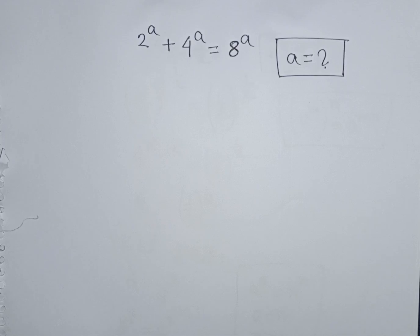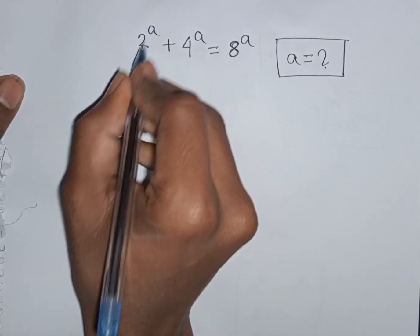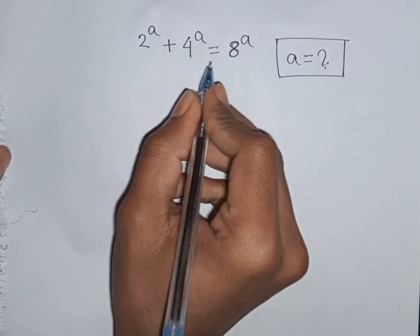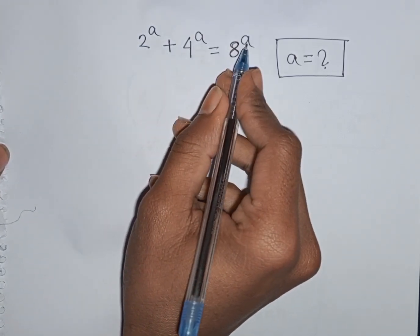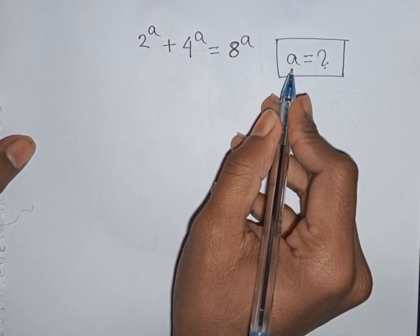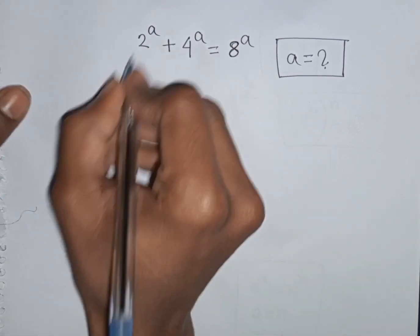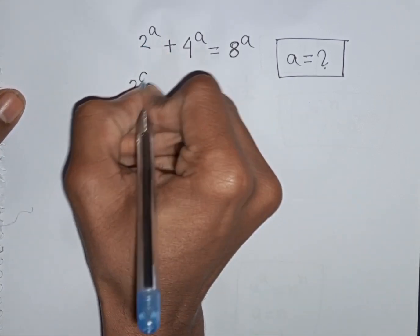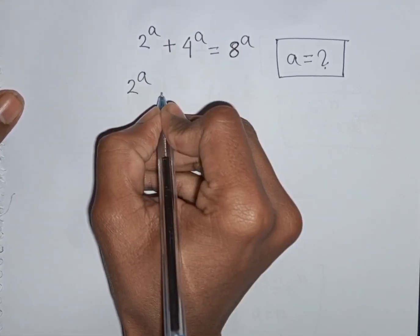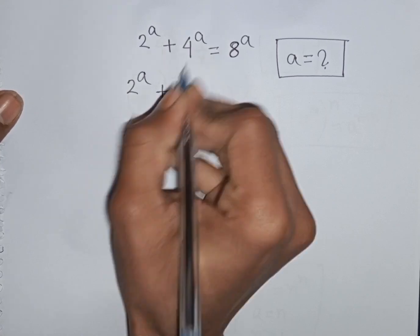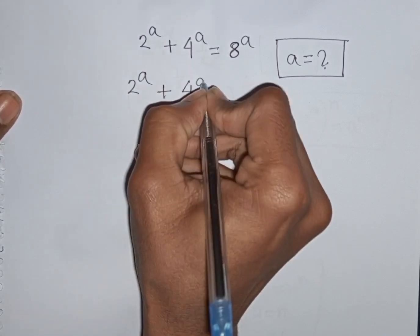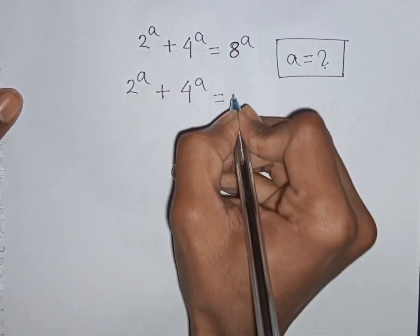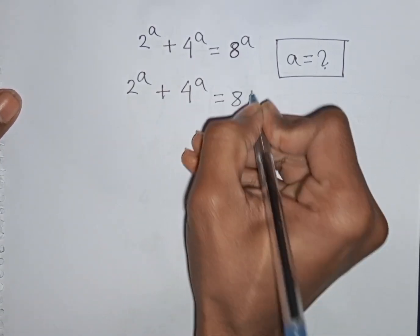How to solve 2 power A plus 4 power A is equal to 8 power A. Find the value of A. So we have 2 power A plus 4 power A is equal to 8 power A.